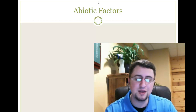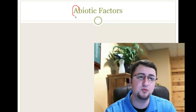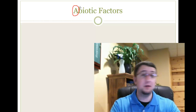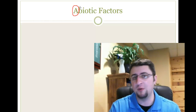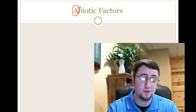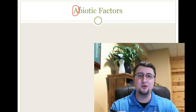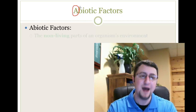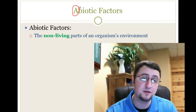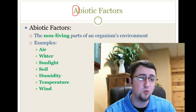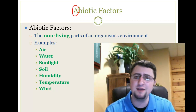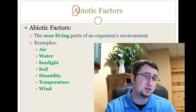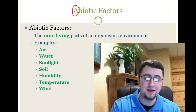The opposite of biotic is what we call an abiotic factor. I want to emphasize what it means to put the letter A in front of things — 'abnormal' is the opposite of normal, so abiotic is the opposite of biotic. Abiotic factors are the non-living parts of an organism's environment. That can include the air, the water, the sunlight, the soil, the humidity, the temperature, and even the wind. All of those things allow organisms to live where they live, but are non-living themselves.